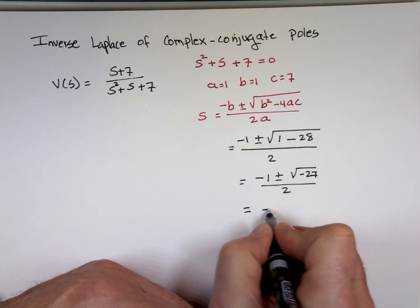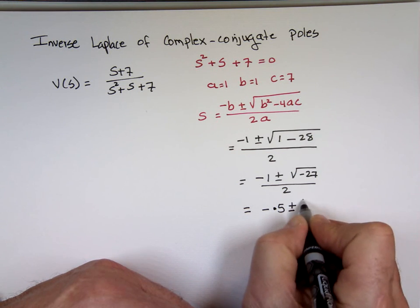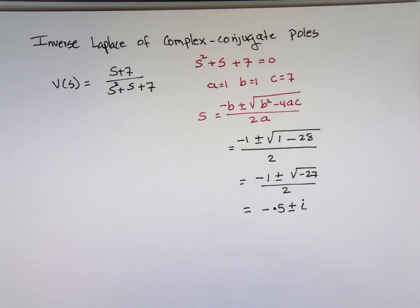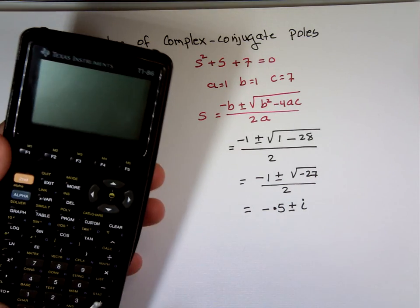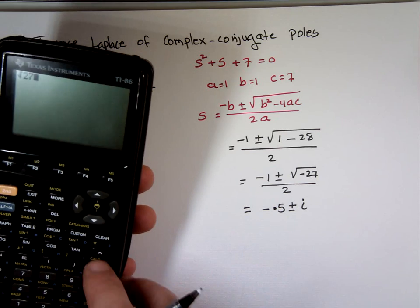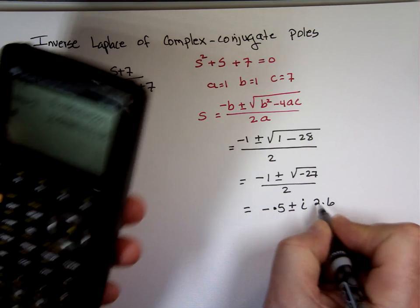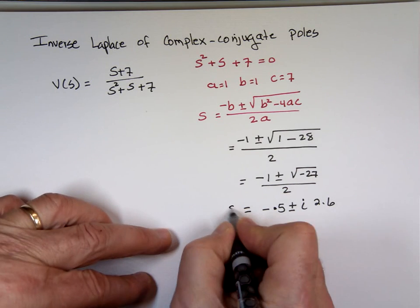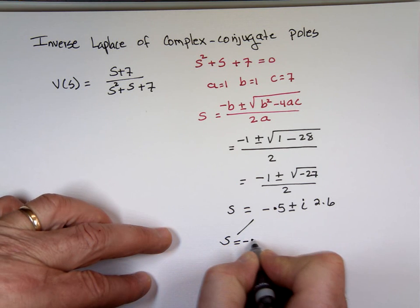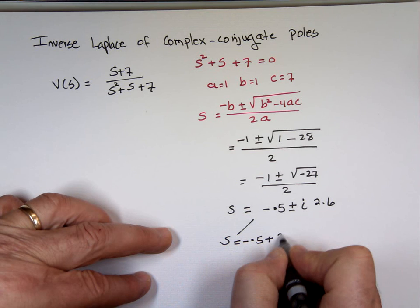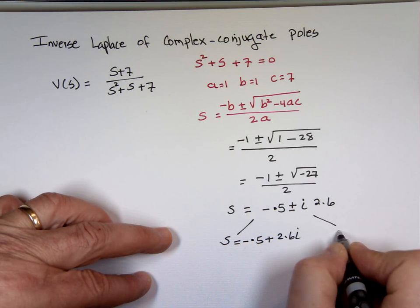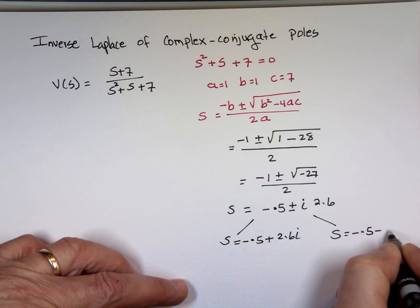So, it's minus 1 plus or minus the square root of negative 27 over 2. Basically, your answer is going to be negative 0.5 plus or minus i times the square root of 27 over 2. Roughly 2.6i. So, one solution is S equals negative 0.5 plus 2.6i. The other one is S equals negative 0.5 minus 2.6i.